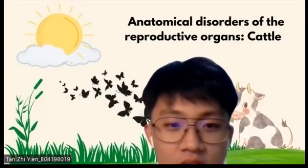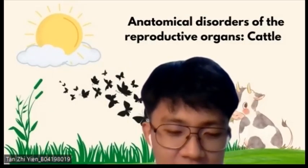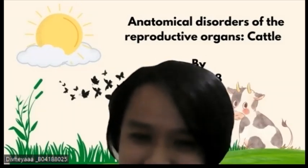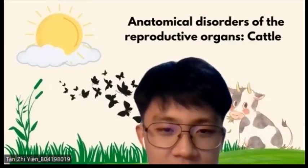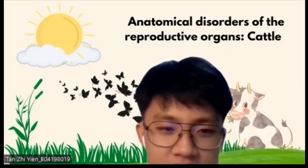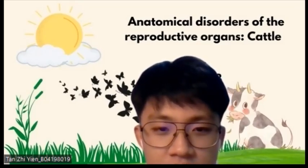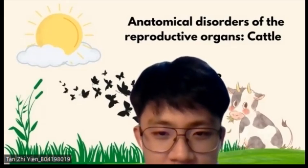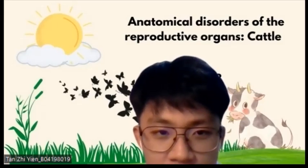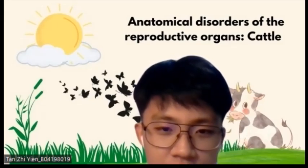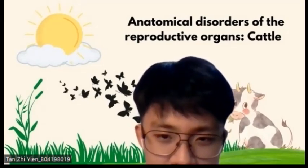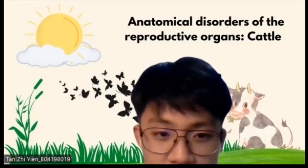Hello everyone, welcome back to our podcast. My name is Zian, I'm Libya, and I'm So. Today we'll be discussing something very important for veterinary students, which is about the anatomical disorders of the reproductive organs in cattle. We'll be focusing on four disorders: freemartinism, White Heifer Disease, hypoplasia of both ovary and testis, and cryptorchidism.